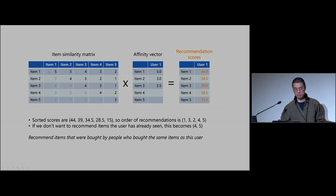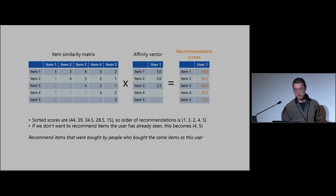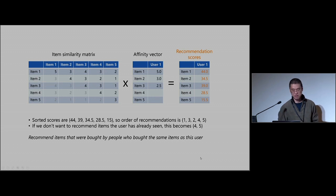As a quick example: take your similarity matrix and affinity vector for a particular user, multiply them together to get scores. For item number two, that's three times five, plus four times three, plus three times 2.5, and so on. Then you just sort them, and if you don't want to recommend items the user has already seen, the recommendation vector becomes that.